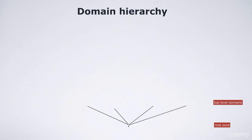From the root zone there are branches to different top level domains. When you see the letters TLD, that means top level domains. At first there were just a few TLDs — among the first ones were .net, .edu, and .com. For many years there was just a handful of those generic top level domains, and also country-specific TLDs like .se in Sweden. Nowadays there are thousands of TLDs, and you can actually get your own TLD if you have enough money.